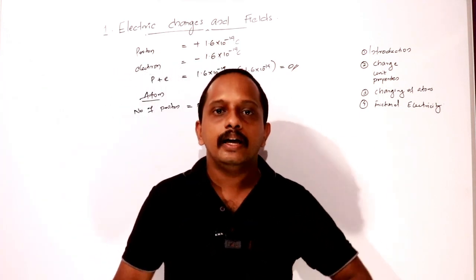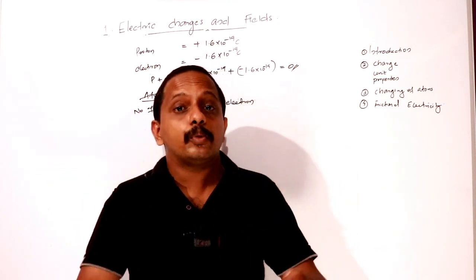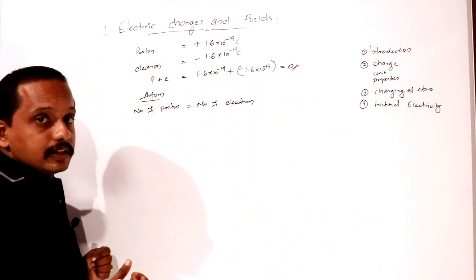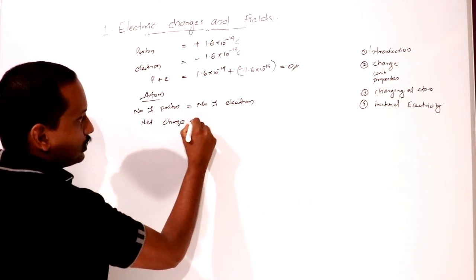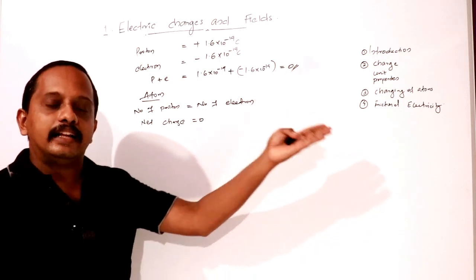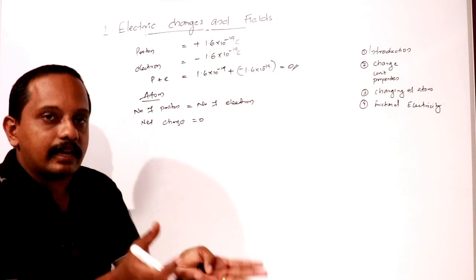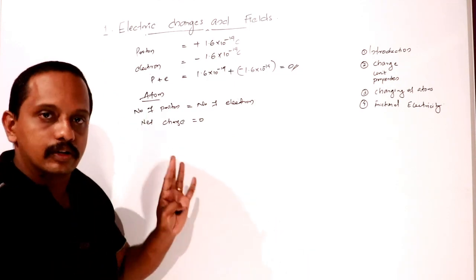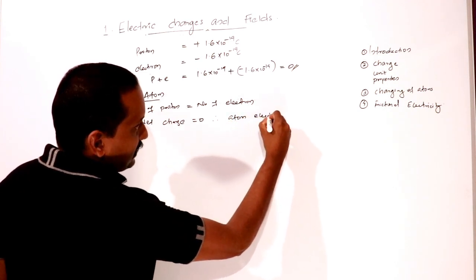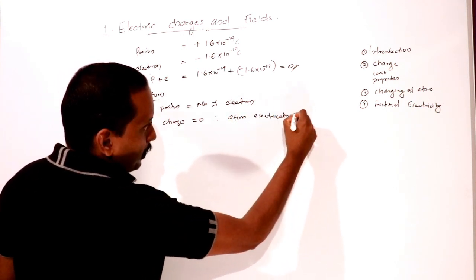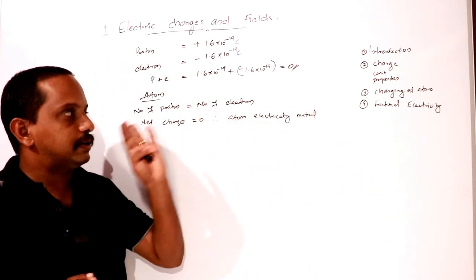The number of protons equals the number of electrons in a neutral atom. The net charge is zero. Therefore, the atom is electrically neutral.